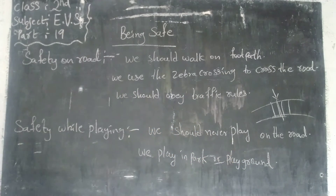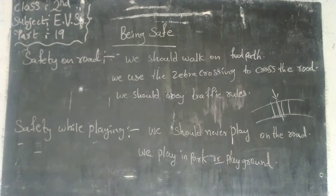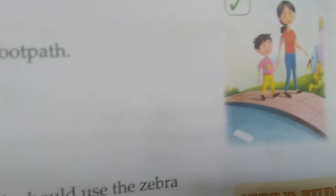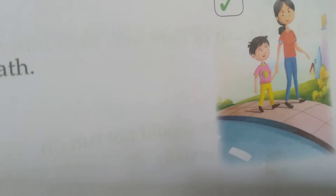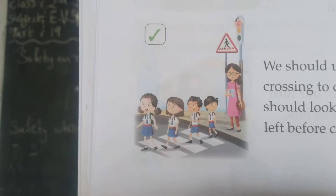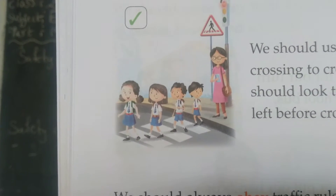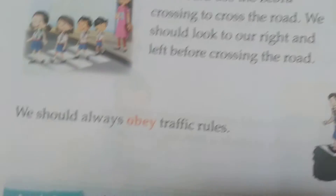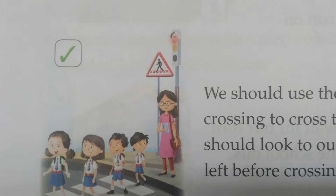Now I will show the traffic lights signal. We should always walk on the footpath only. That area beside the road is called the footpath — we should walk there. We should cross using the zebra lines when we want to cross the road.